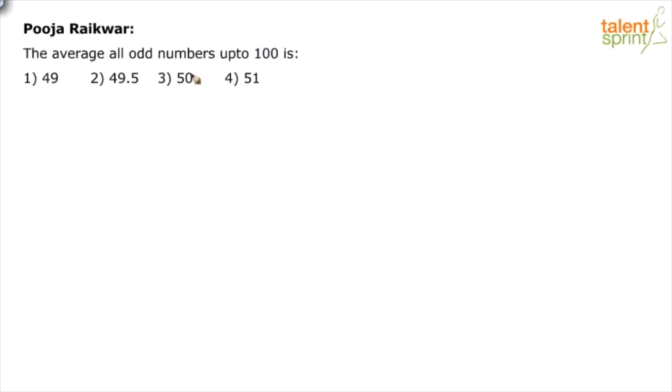What are the odd numbers up to 100? Starting from 1, 3, 5, 7, 9, 11, and so on. 99 is the last odd number less than 100, so we have 1 to 99.